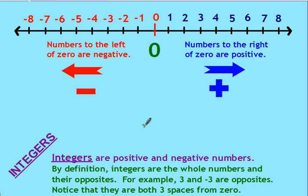Integers are positive and negative numbers. If I told you that I was walking to school and I found $5, where on this number line would I graph $5? It would be right here at a positive 5. Likewise, if I told you I was walking to school and I lost $5, I would put it down here at negative 5 because I lost $5.